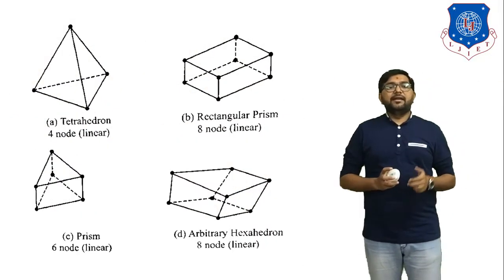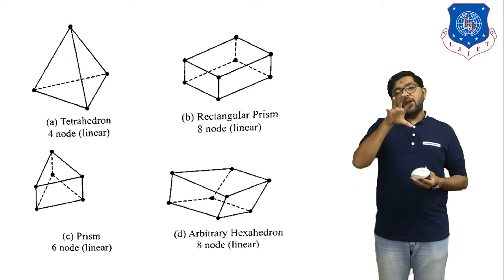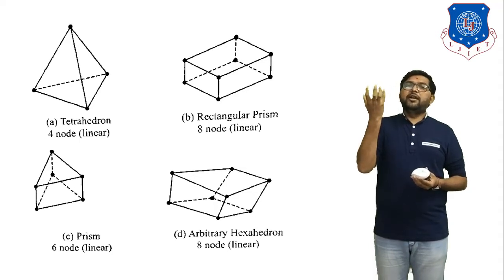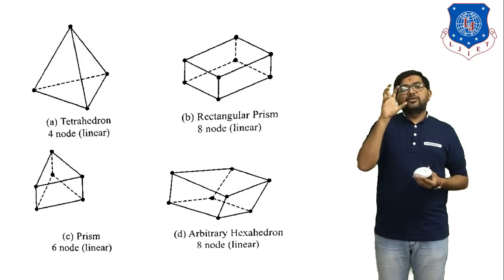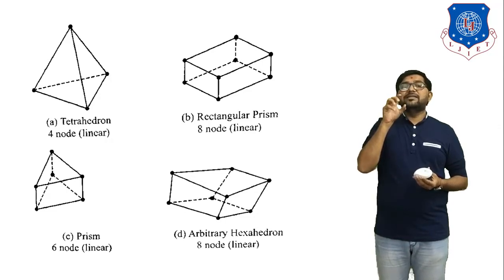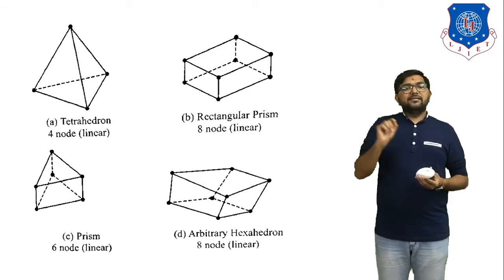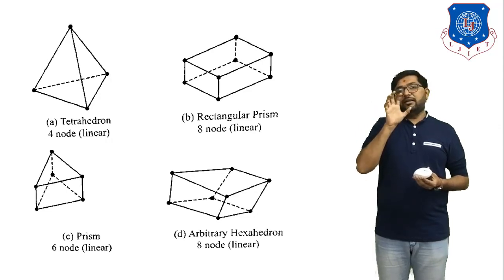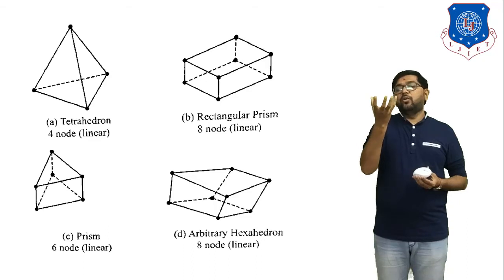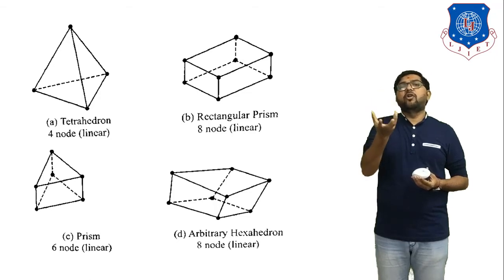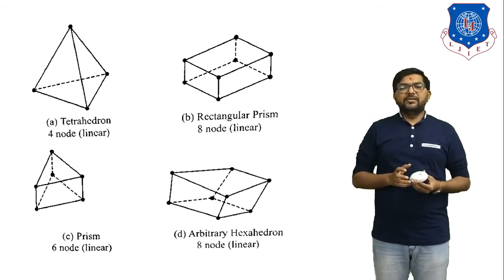Figure A shows a tetrahedron 4-node linear element. All these are 3D objects with 3 coordinates: x, y, and z. In the tetrahedron with 4 nodes, the total number of elements is also 4. Figure B shows a rectangular prism 8-node element — it looks like a cube, and a cube has 8 vertices, so there are 8 nodes. This is a rectangular prism 8-node linear element, as seen in figure B.